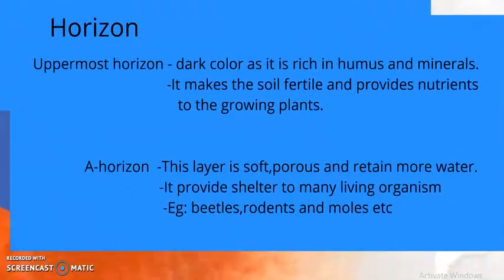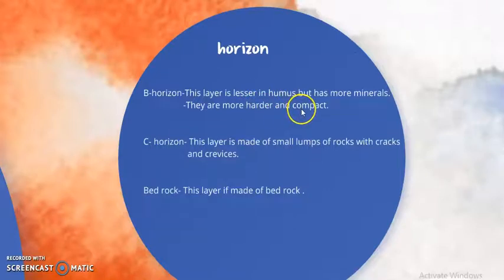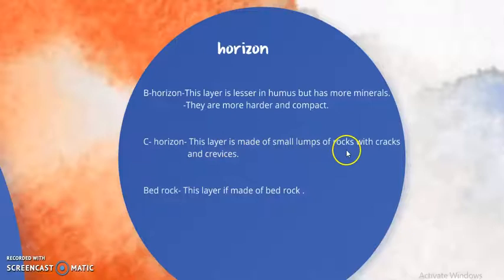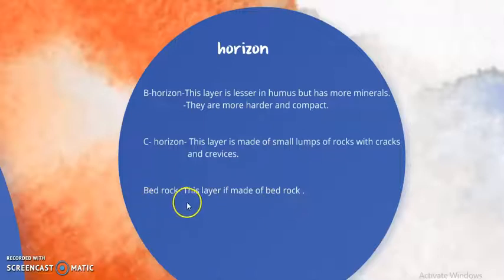Moving on to the next horizons, we have the B, C, and bedrock. The B horizon has less humus compared to the A horizon but contains more minerals. It is harder and more compact than the A horizon. The C horizon is a layer made up of small lumps of rock with cracks and crevices, so that the roots of the plant can go deeper into this layer. The bedrock is another layer which contains large, bigger rocks — these are the mother rocks, called bedrock. So we have different horizons: A, B, C, and the bedrock.